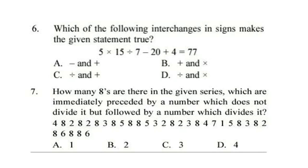Question 6. Which of the following interchanges in signs makes the given statement true? 5 into 15 divided by 7 minus 20 plus 4 is equal to 77. You have to interchange signs so that answer becomes 77. Correct answer is option C. Division sign and addition sign.